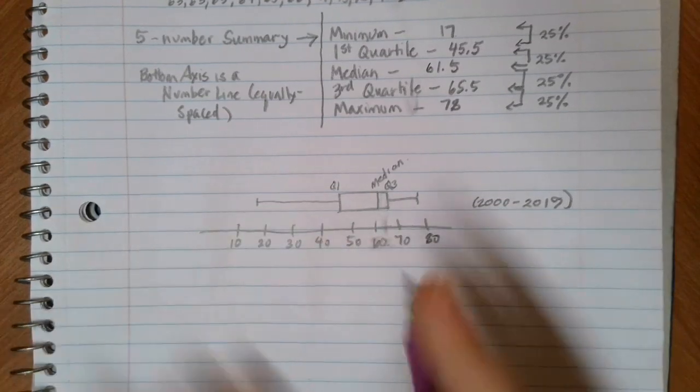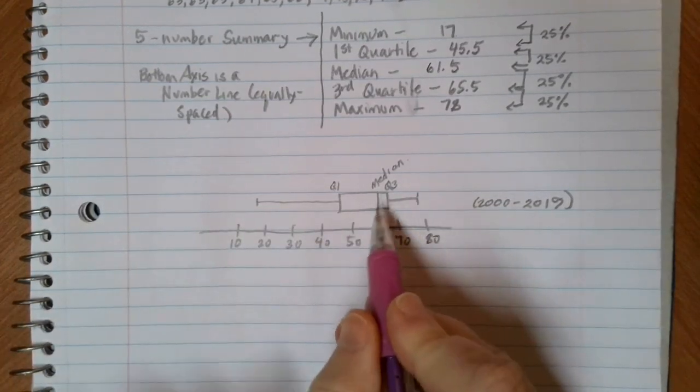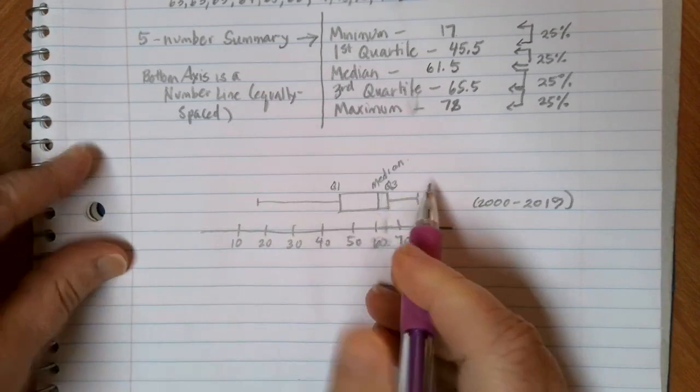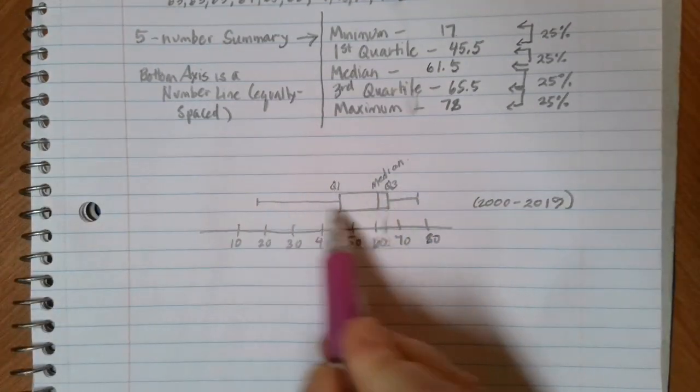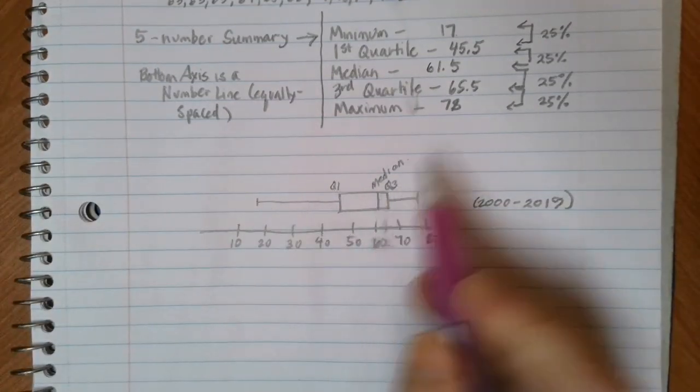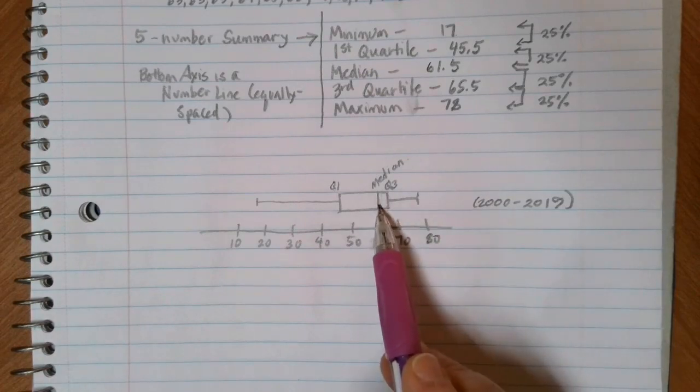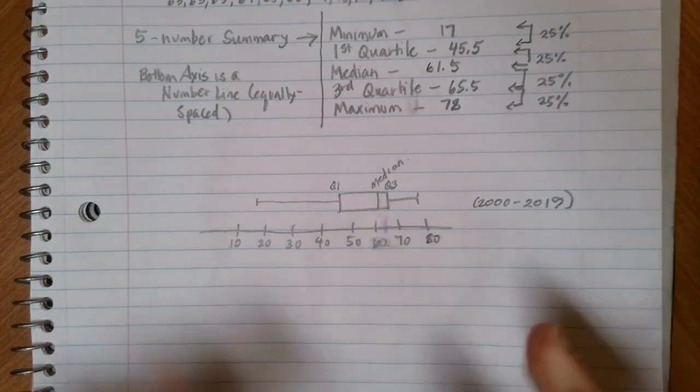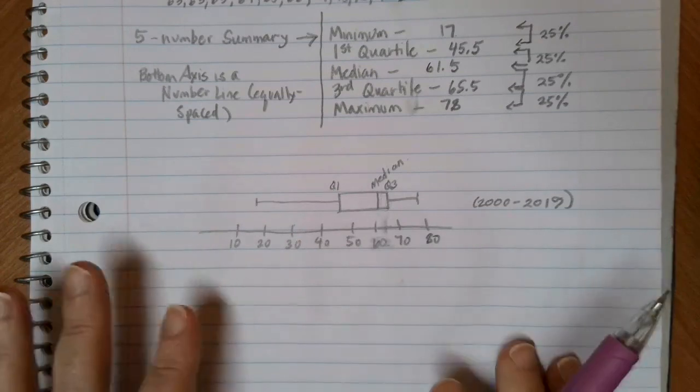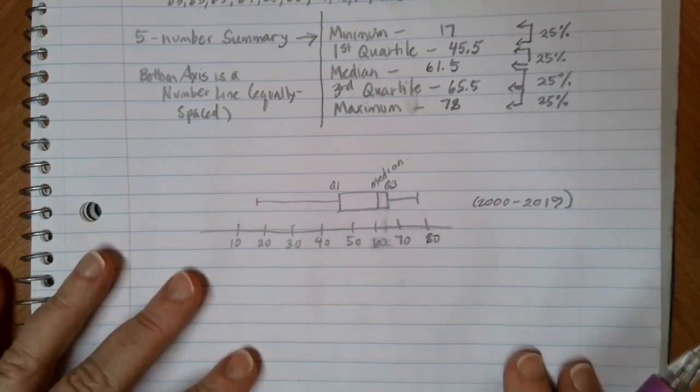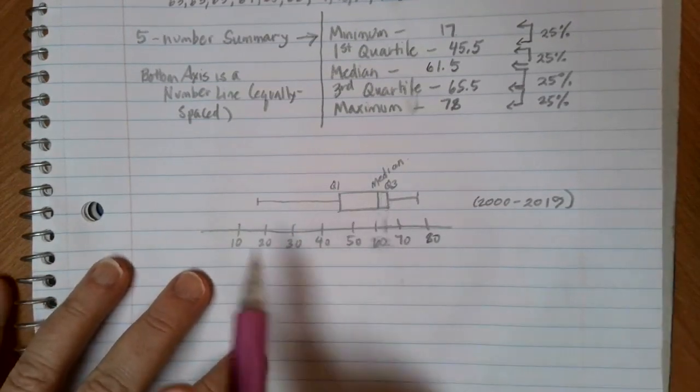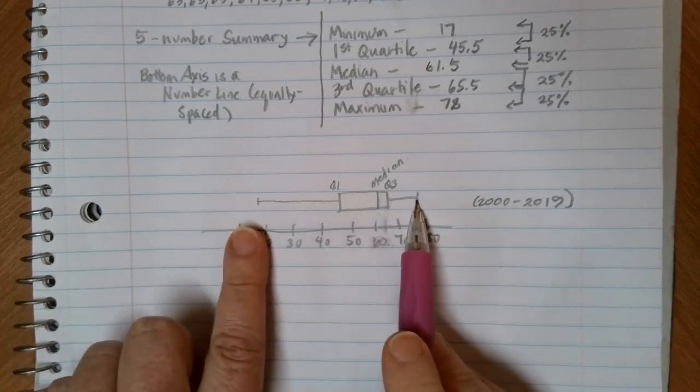And we can kind of see that spread. You can see the left skew, right, because that left side is spread out farther. 50% of the data is between 17 and 61.5, and then 50% of the data is between that 61.5 and 78. So this gives us a real nice view of what's going on. We don't have access to any specific data points other than the maximum and minimum, which are visible here.